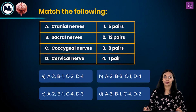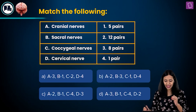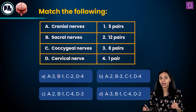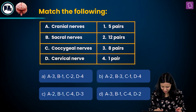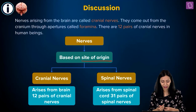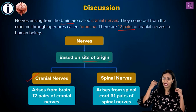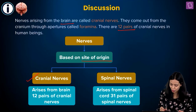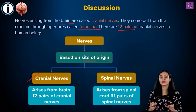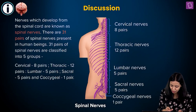Now let's look at another match the following question. Under column 1 we have cranial nerves, sacral nerves, coccygeal nerves and cervical nerves. Under column 2: five pairs, twelve pairs, eight pairs and one pair. Nerves are classified based on their site of origin. If nerves arise from the brain they are cranial nerves — there are twelve pairs. We also have 31 pairs of spinal nerves that arise from the spinal cord.